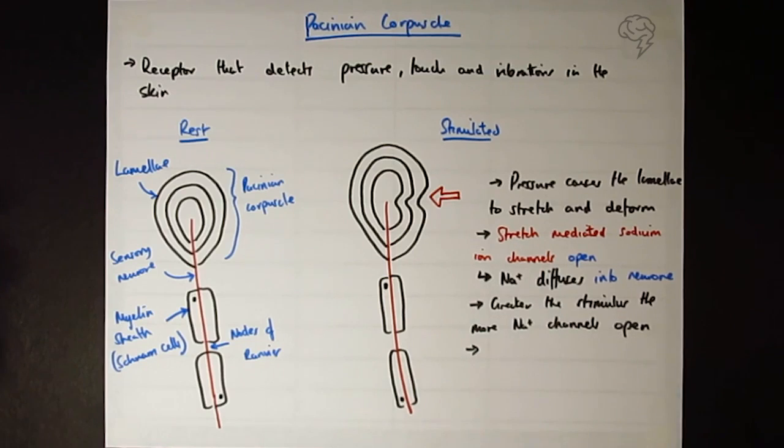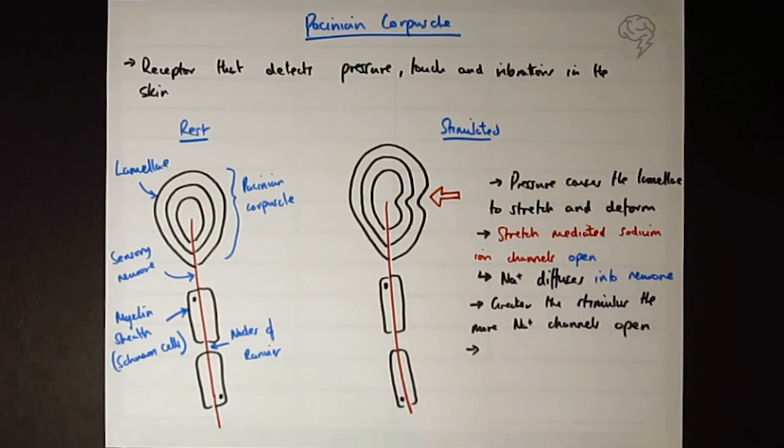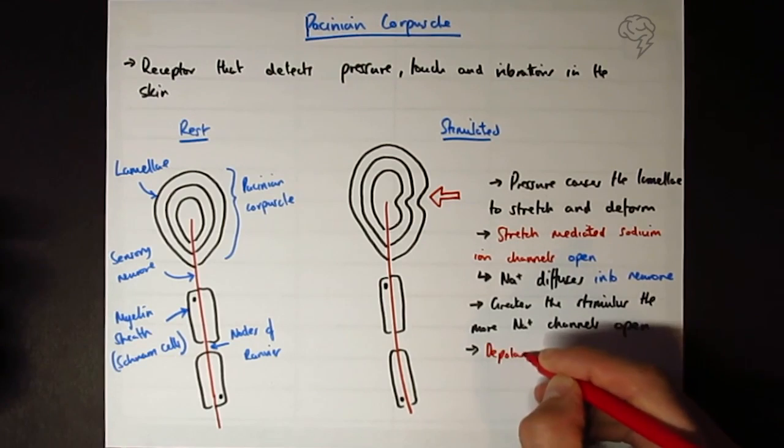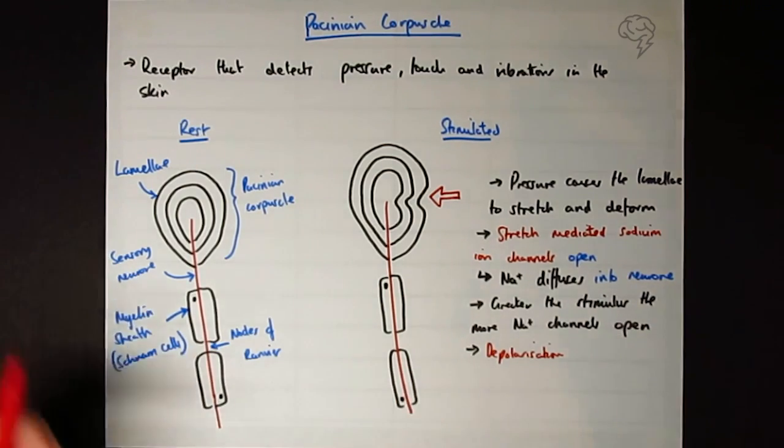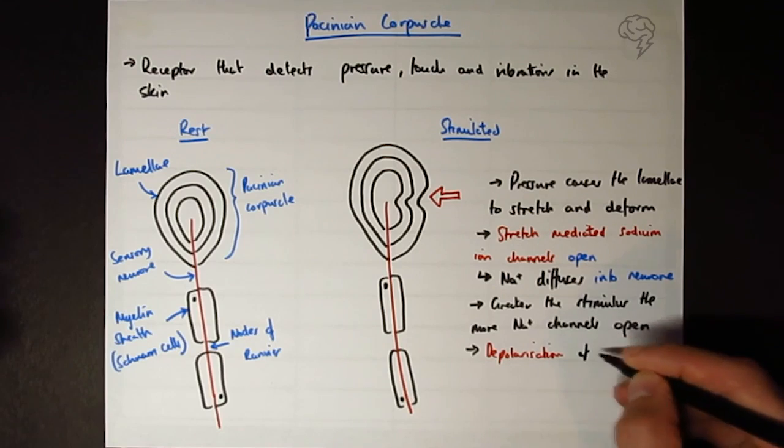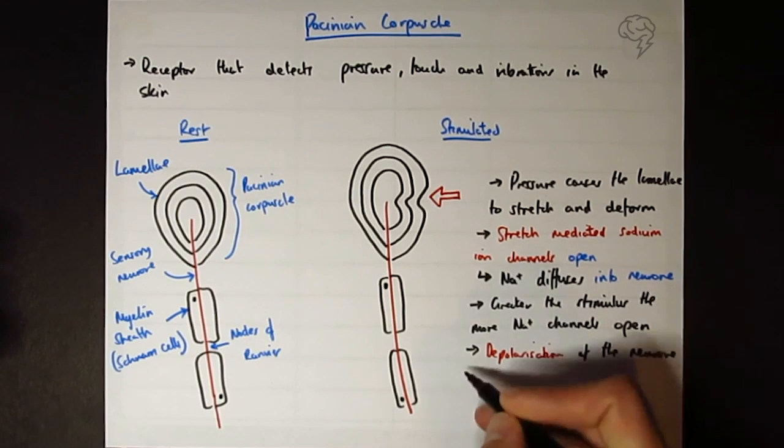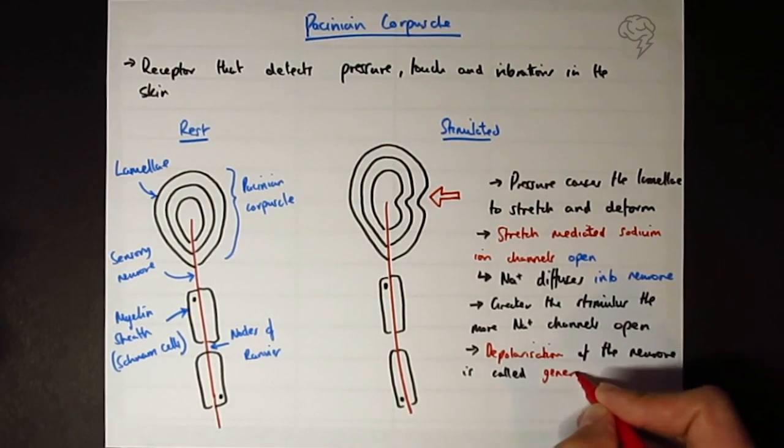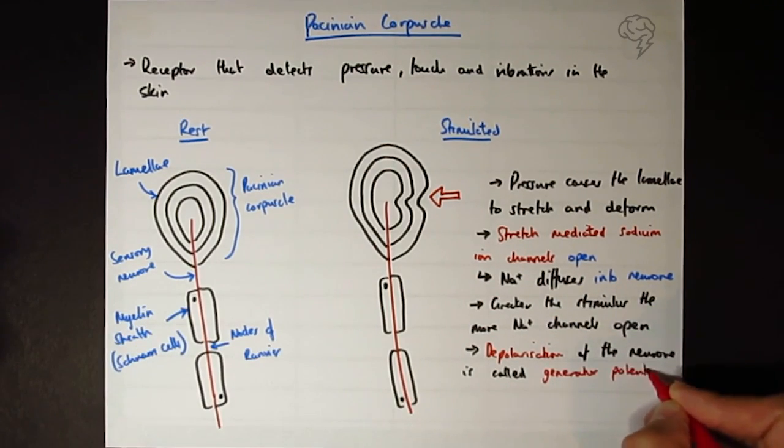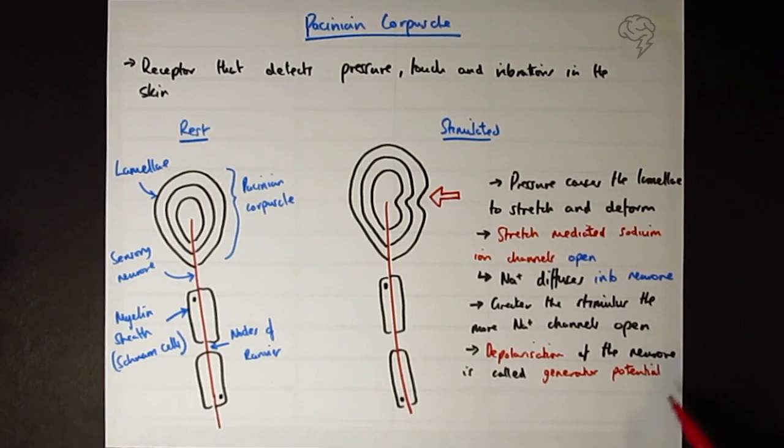So this is going to cause depolarization, which is the generator potential. So generator potential is the change in potential difference in voltage across the membrane of the neuron before you reach threshold.